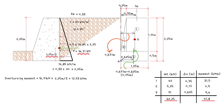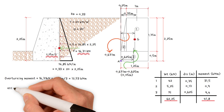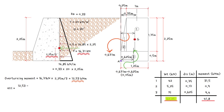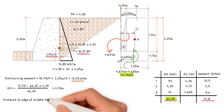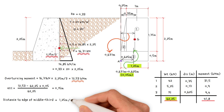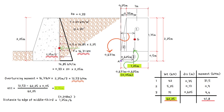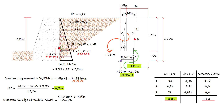Next, we need to check if the resultant is within the middle third. The magnitude of the vertical resultant must equal the total weight of the wall. To find the eccentricity of the vertical resultant force, we take moments about the center of the base. The eccentricity equals the overturning moment 12.53 minus 62.25 times the distance from base center 0.05 meters, divided by 62.25, giving 0.15 meters. The distance to the edge of the middle third equals 1.25 meters divided by 6, which is 0.208 meters — greater than 0.15 meters. As a result, the resultant lies within the middle third.